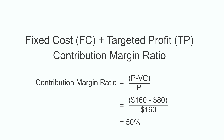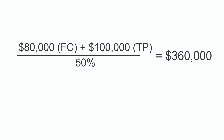We also have to calculate the contribution margin ratio, which is sales per unit minus variable cost per unit, divided by sales per unit. So $160 minus $80, divided by $160, equals 0.5 or 50%. Now let's plug in the figures: fixed cost plus targeted profit divided by contribution margin ratio — $80,000 plus $100,000 divided by 0.5 — which gives you $360,000.